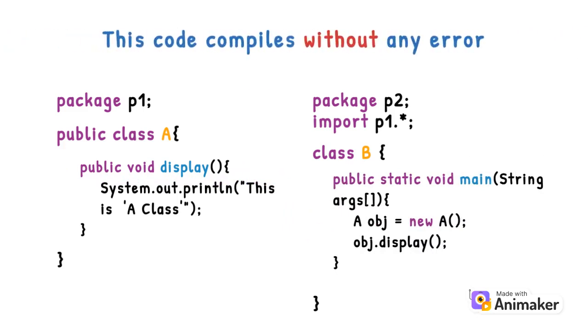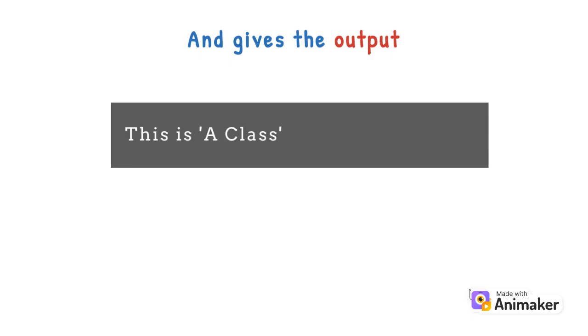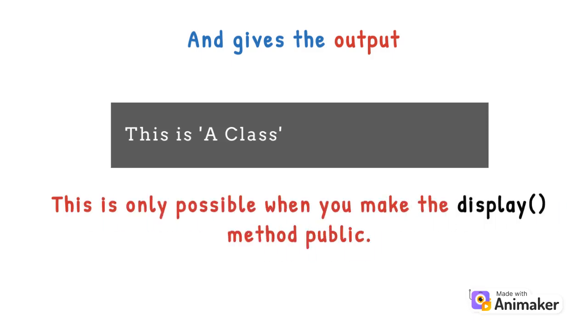This code compiles without any error and gives the output 'This is A class.' This is only possible when you make the display method public.